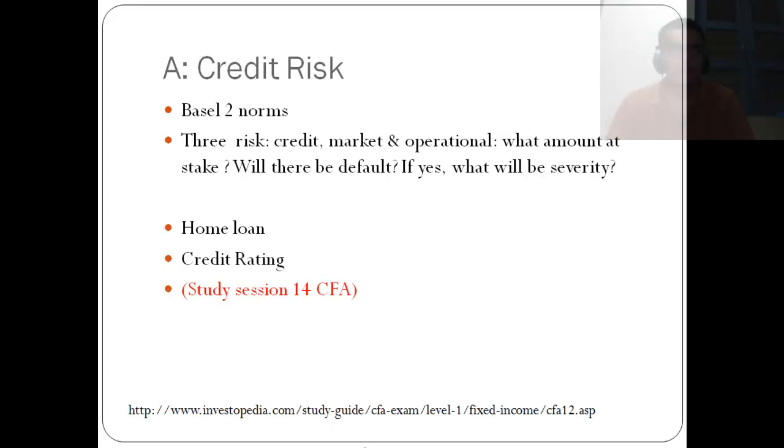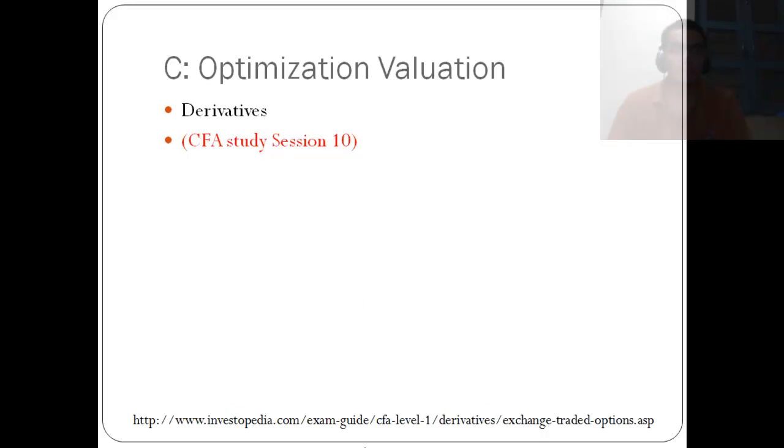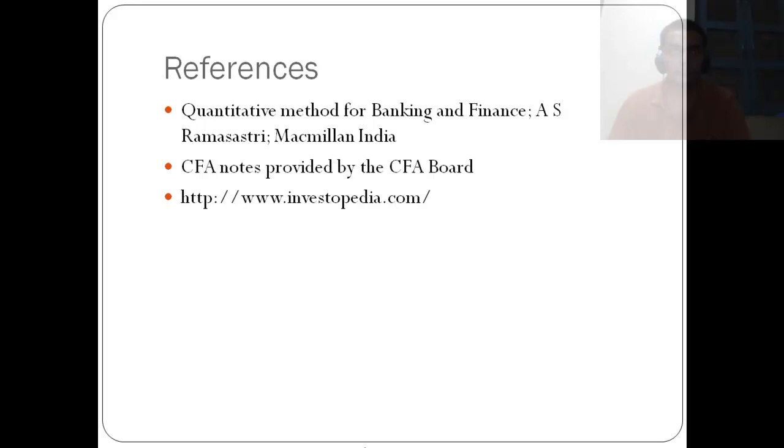The credit risk - the Basel 2 norms defines three risks: credit, market, and operation. For the credit risk, we have to find out the amount at stake, whether there will be a default, and the severity which is taken in mathematical functions. Discussions are made to decide the home loans and to understand the meaning of credit rating. Then, we have the value at risk and the optimization valuation, a part of which can be linked down to the derivatives.